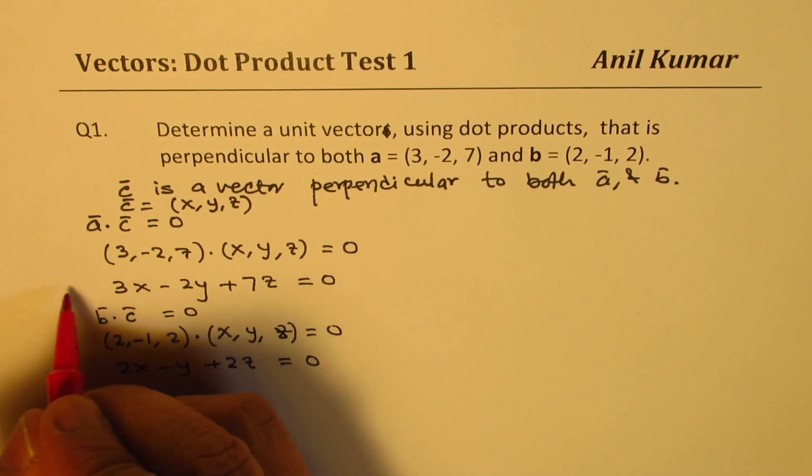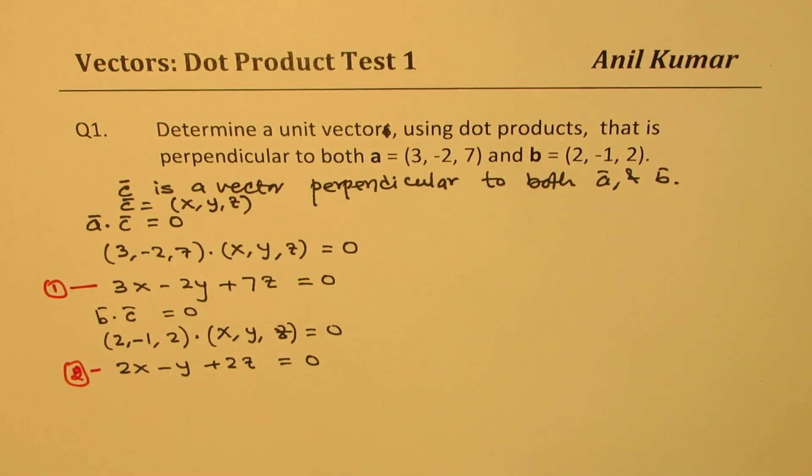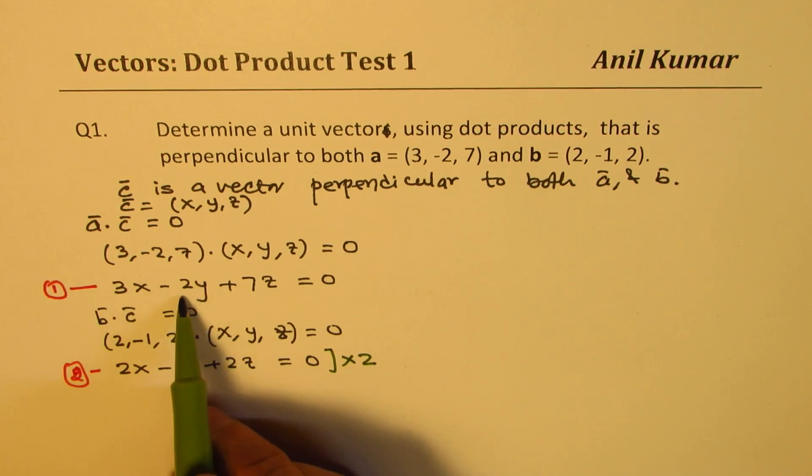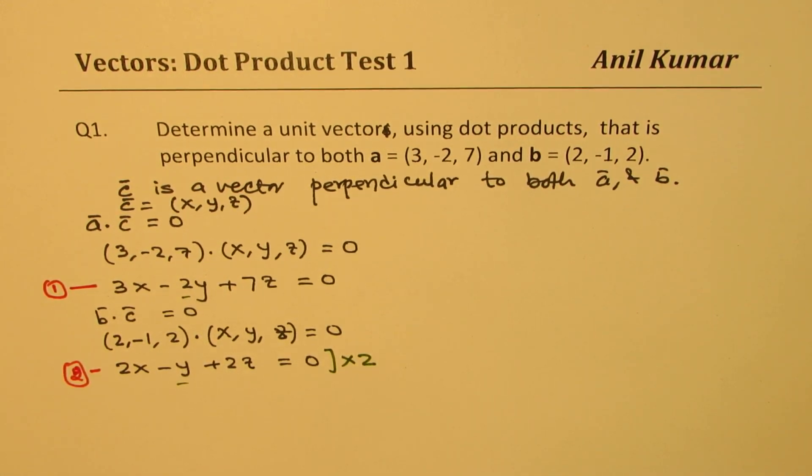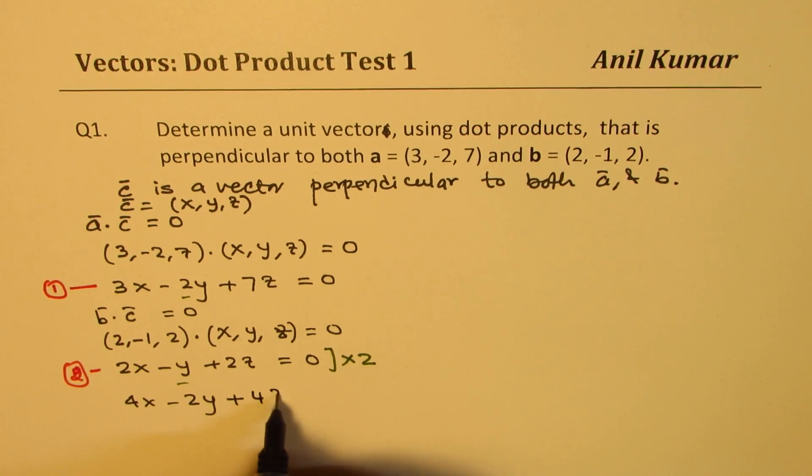So we actually get two equations from here. And we have three things to figure out. So that means we are looking for a parametric solution. So what we could do here is that we can times this equation by 2 so that we get 2y, and then we can get rid of at least y. So if I times this by 2, I get 4x - 2y + 4z equals to 0. So let me call this as our equation number 3.